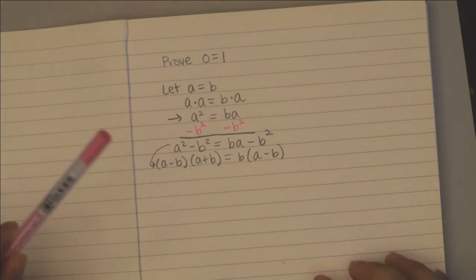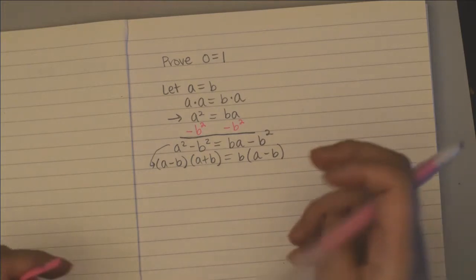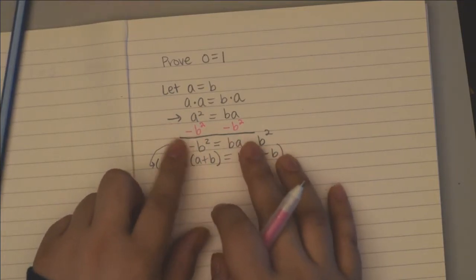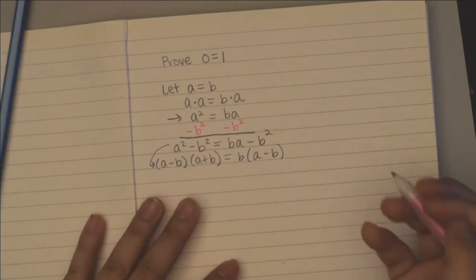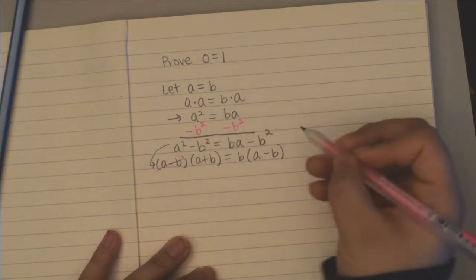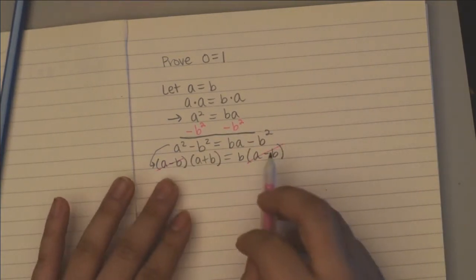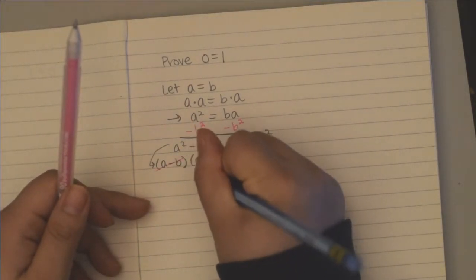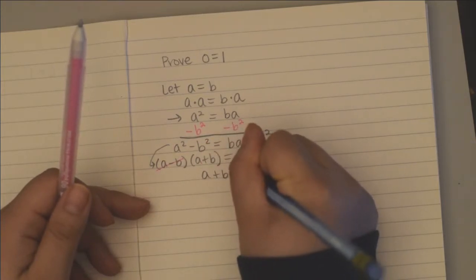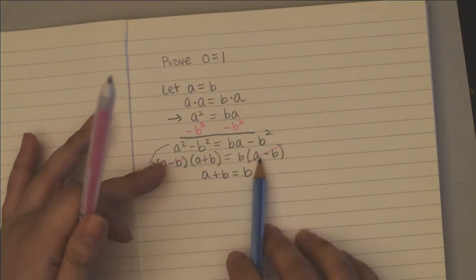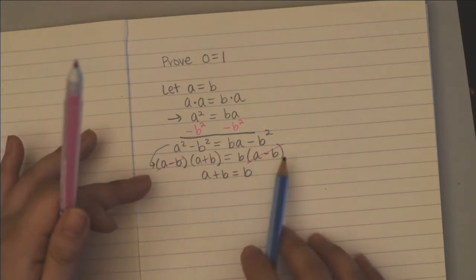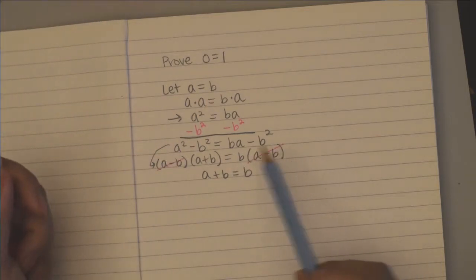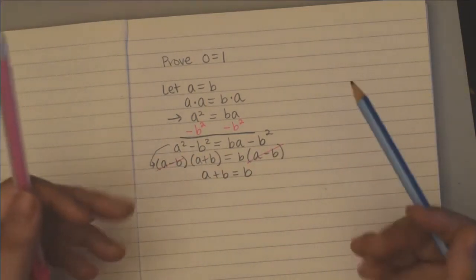So A minus B. And then, this is where it gets kind of complicated, but remember that you subtracted B squared and then you factor. It's important because now I can cancel out the A minus Bs on both sides. You can either think of it as dividing by A minus B on both sides and then they cancel to be 1 — and anything times 1 is itself — or you can see that it's on both sides, so you can cancel it equally.